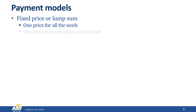Let's move on to different payment models. The first is what we call a fixed price or lump sum payment model — there's one price for all the work, or one price for each phase. For example, if I hire you to mow my lawn, I might pay you $20 to mow the whole lawn, or $10 for the front and $20 for the back. It doesn't matter how long it takes, what equipment you use, how much you spend on gas, or how many people you use. I pay a fixed price we agreed on.